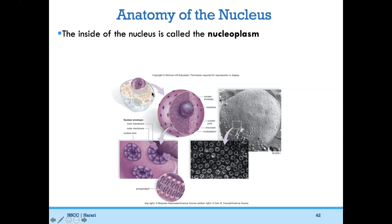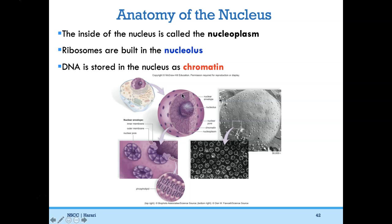The nucleus is the biggest and most prominent organelle. The inside is called the nucleoplasm. There's a region inside called the nucleolus, where ribosomes are built. DNA is stored as chromatin — kind of unraveled, like loose yarn. It only looks like chromosomes when the cell is in a certain phase of division. We'll have to wait for a later chapter to talk more about DNA chromatin.